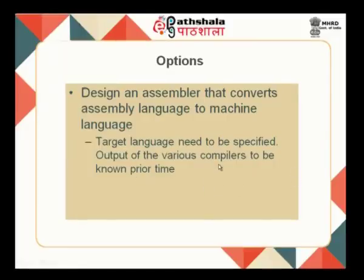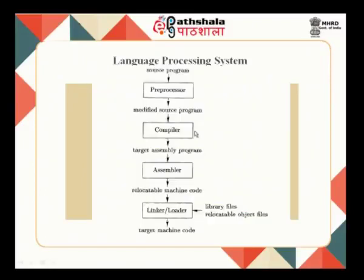Humans write in a language closer to English, called a high level programming language. A compiler converts this into what is called assembly level language. The assembly level language is closer to machine language. Then the assembler takes this assembly language as input and converts it into machine language consisting of 1s and 0s. The target language needs to be specified and the output of the various compilers must be known prior time.